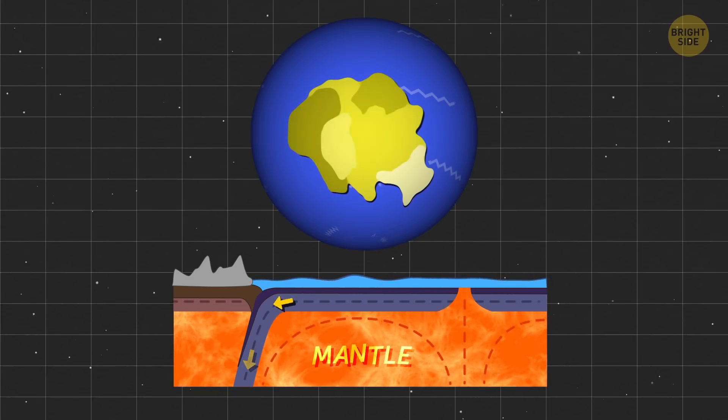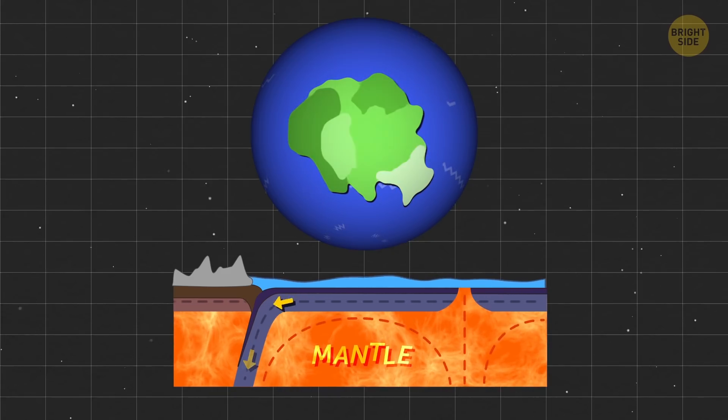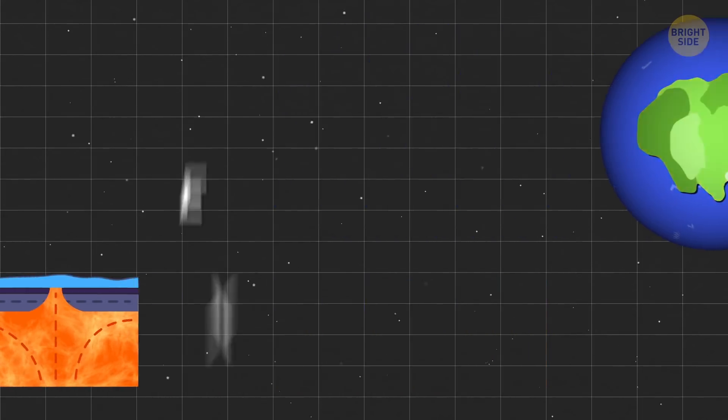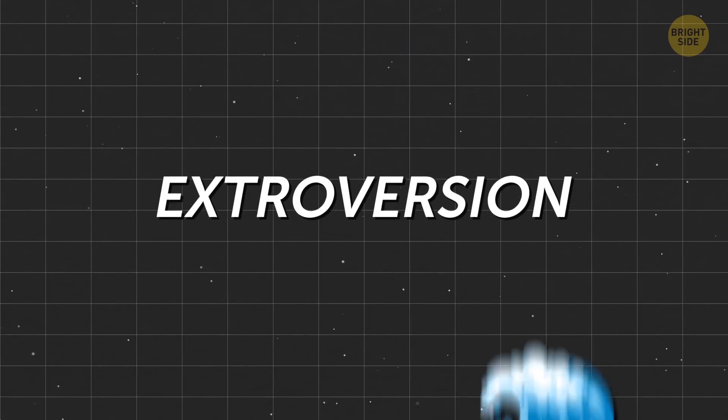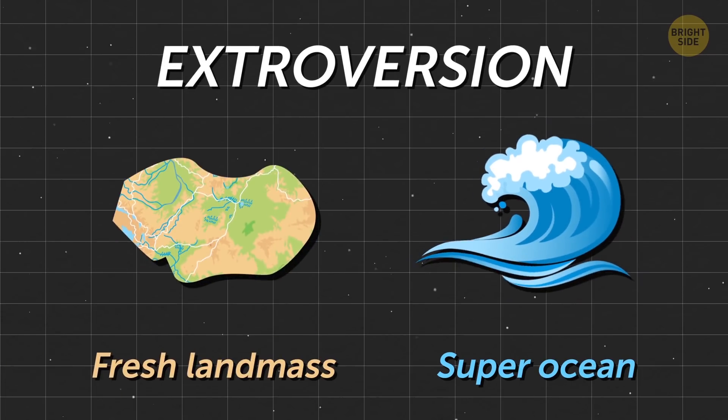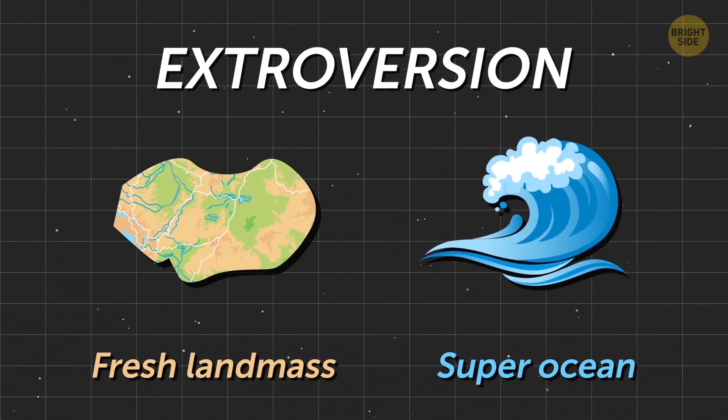So, a new supercontinent gets formed with the same old water that existed before. But extroversion is quite different. That method creates a new superocean and a fresh landmass.